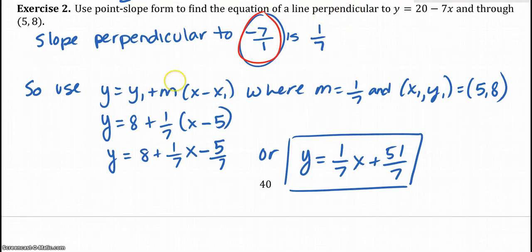So that's the slope I'm going to use for my new perpendicular line. So we're going to use our standard formula that we use, y equals y1 plus m times x minus x1, where the m is 1 seventh and the point x1, y1 is going to be (5, 8). So we just plug those in, plug in the 8, plug in the 1 seventh, plug in the 5, and you get, actually this would be a fine answer. Or if you want to get it in the y equals mx plus b form, you can multiply that out, and then you can just add these on your calculator, and you will get that. That's exercise 2.